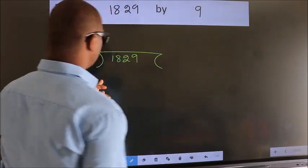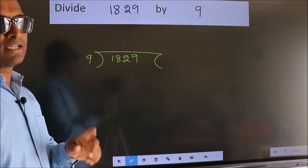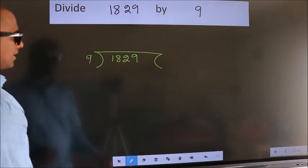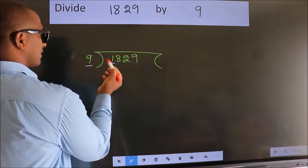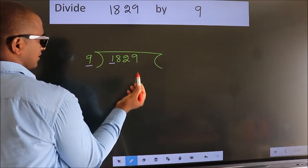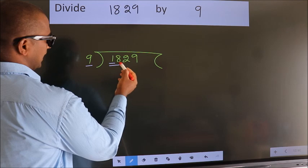This is your step 1. Next, here we have 1, here 9. 1 is smaller than 9, so we should take 2 numbers, 18.